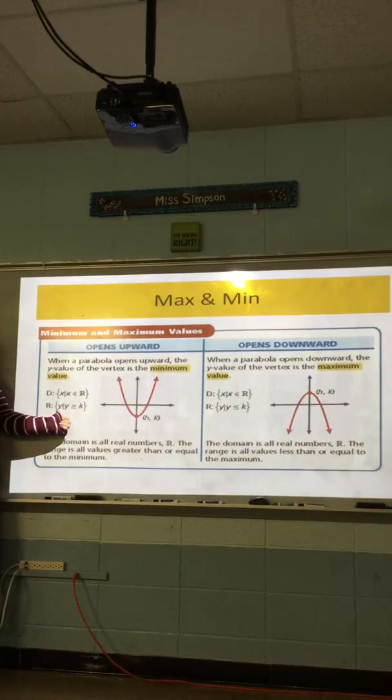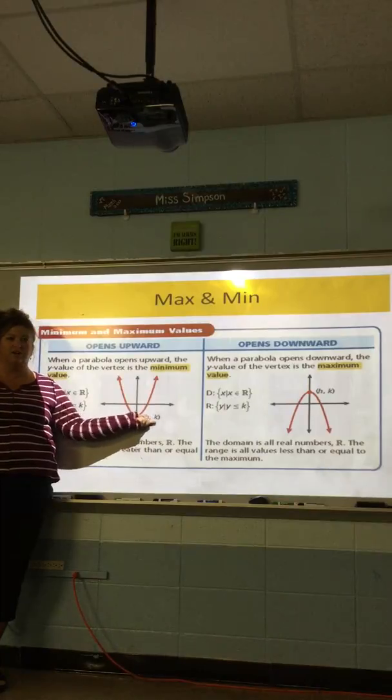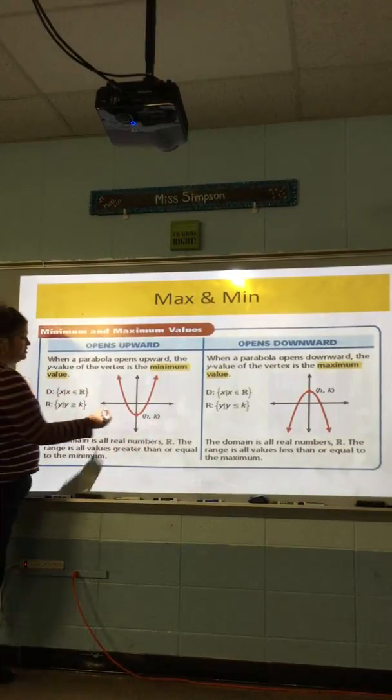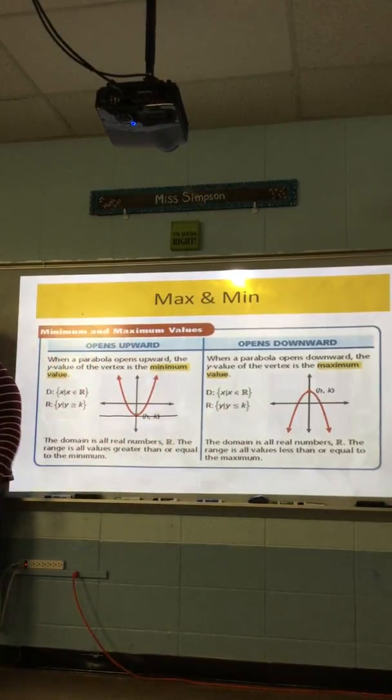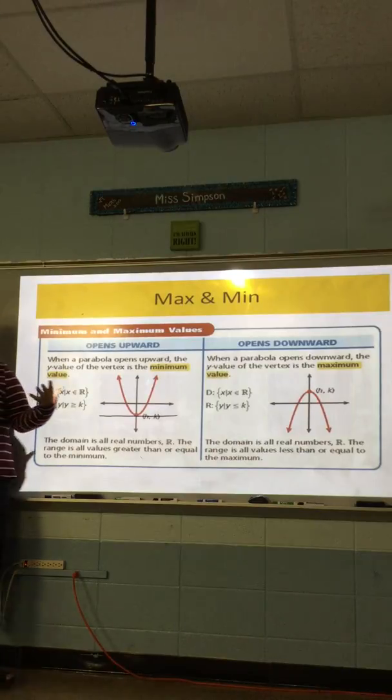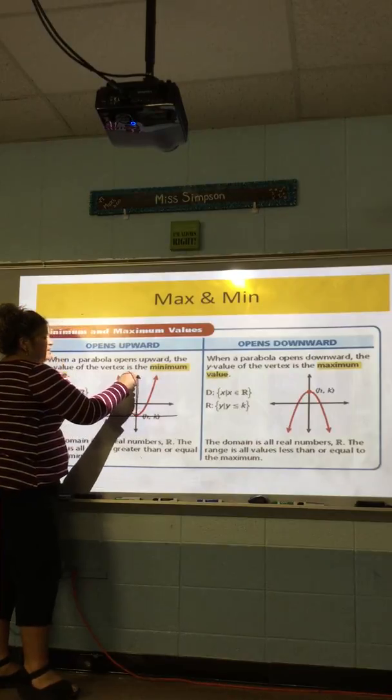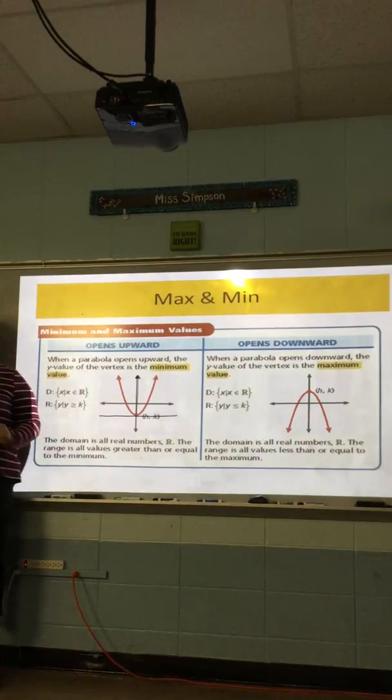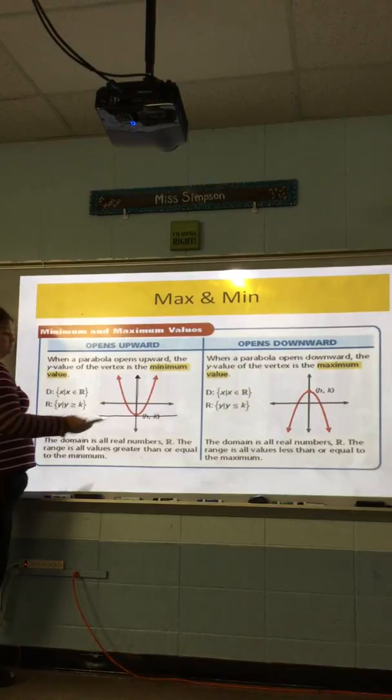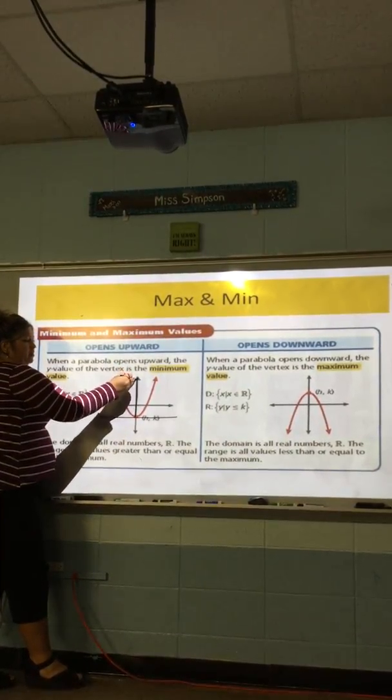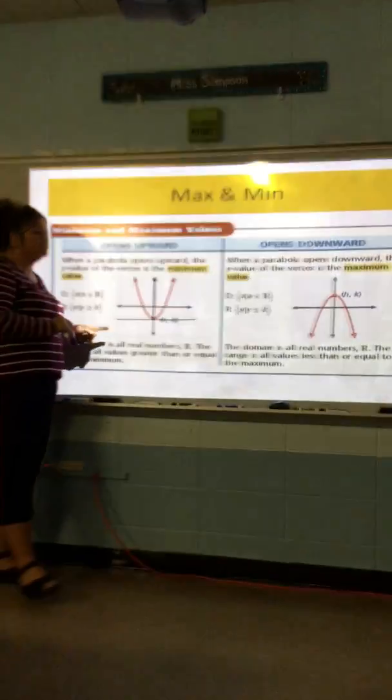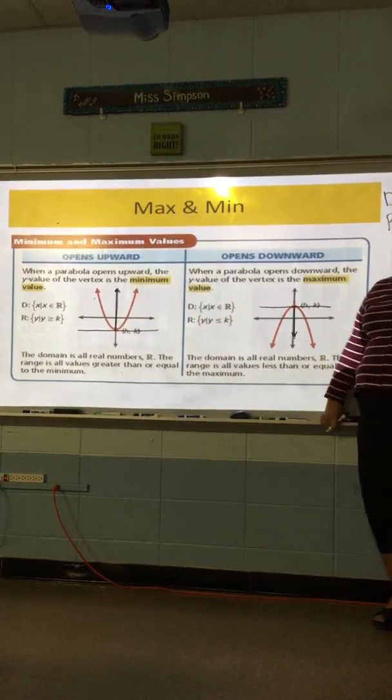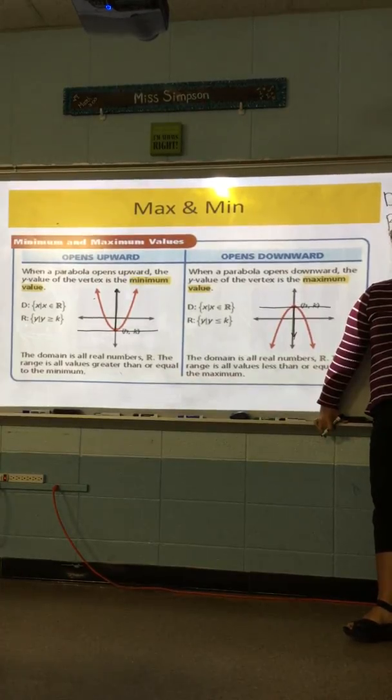When we talk about the range, y such that y is greater than k, what's k represent? The vertex, the y value. Think about if I was to put a line across here. The range is all of the outputs. What's my outputs? The y's. So, everything starting at this point and going up the y is going to be my range. Does everybody understand why it's greater than and not less than? Because everything's above it. No matter where I start on my graph, if I'm going up, are they getting bigger or smaller? Bigger. What about this one? They're going down. So, are my values for y getting bigger or smaller? Smaller. That's why they're less than or equal to.